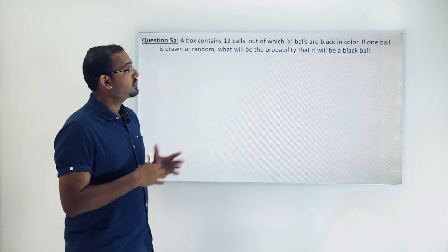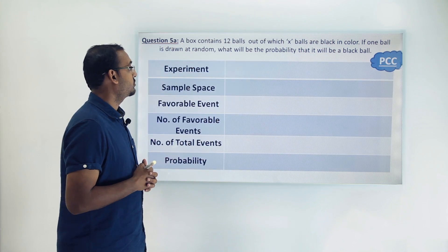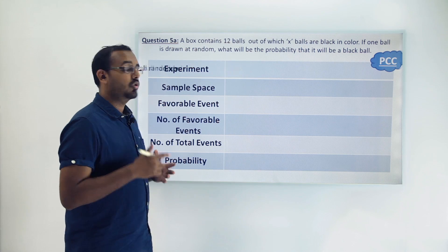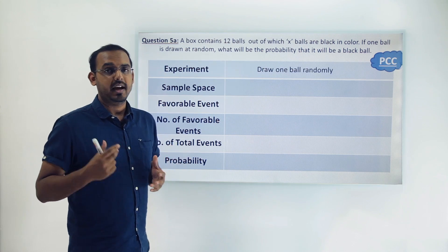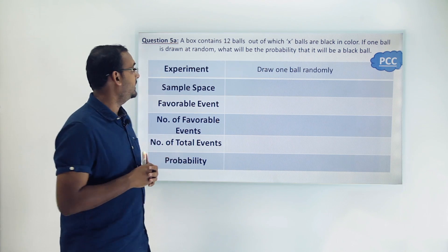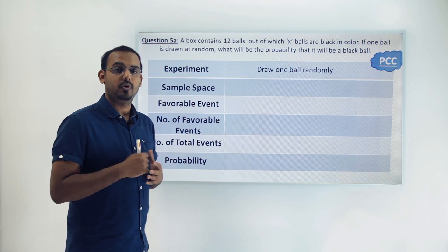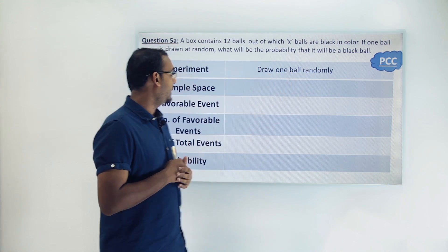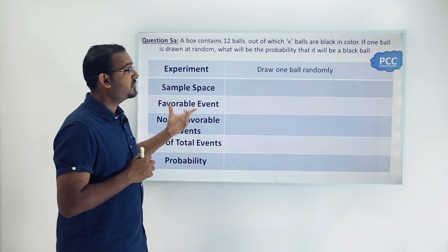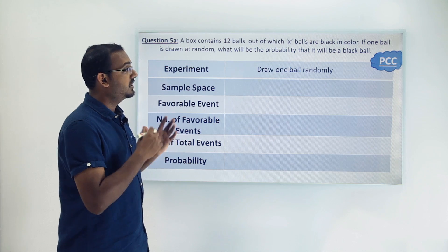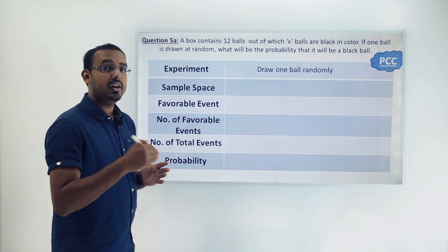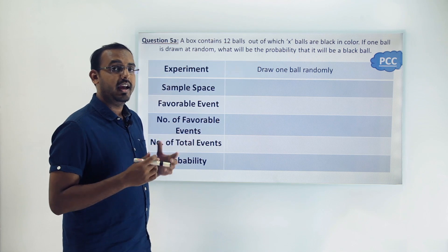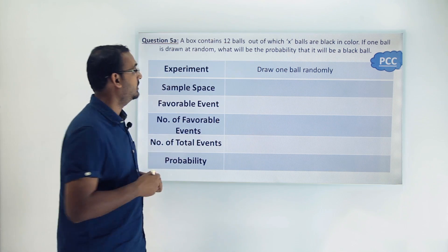Let's draw the PCC here and try to analyze this question. The experiment we are performing is drawing a ball out of a bag at random — something we have looked at before. The sample space of this particular experiment is now a little tricky, because we don't know how many balls are black and how many are white.